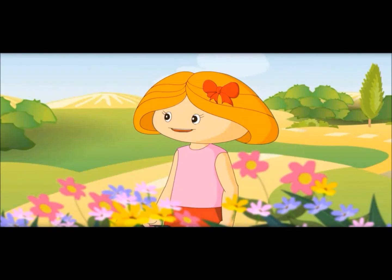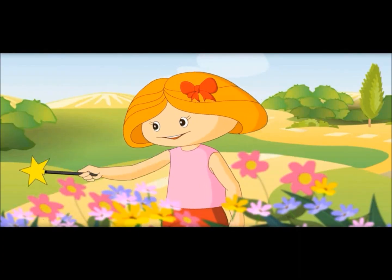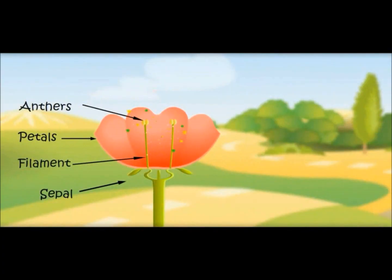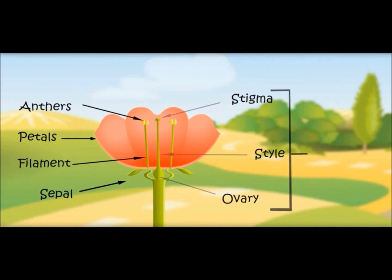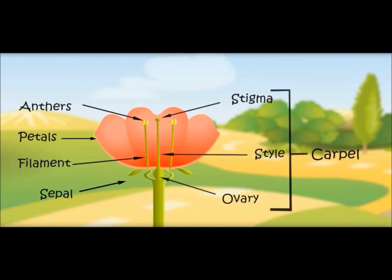Now come the female parts. Female parts are stigma, style, and ovary. All these female parts are called carpel.